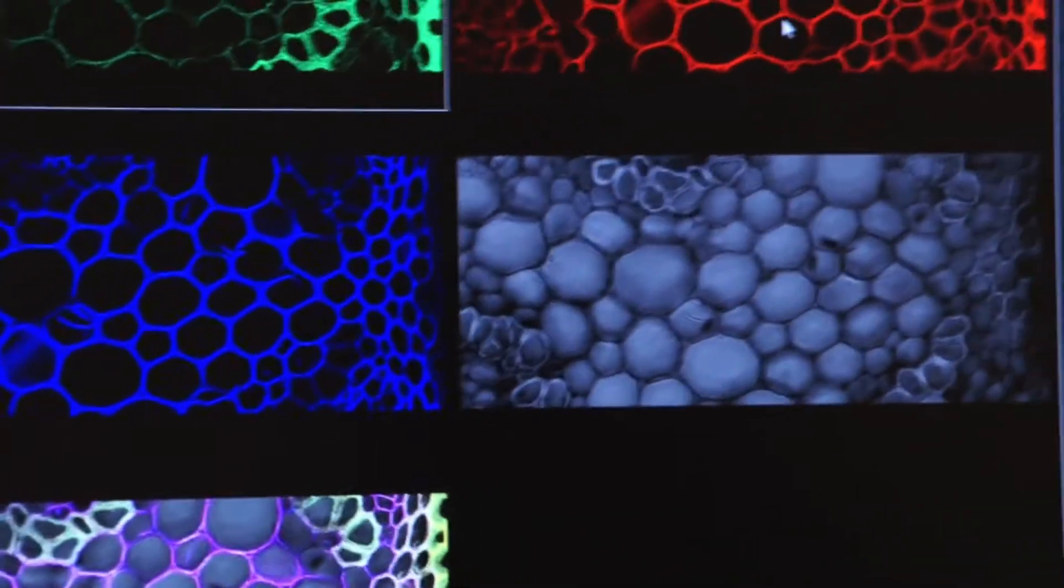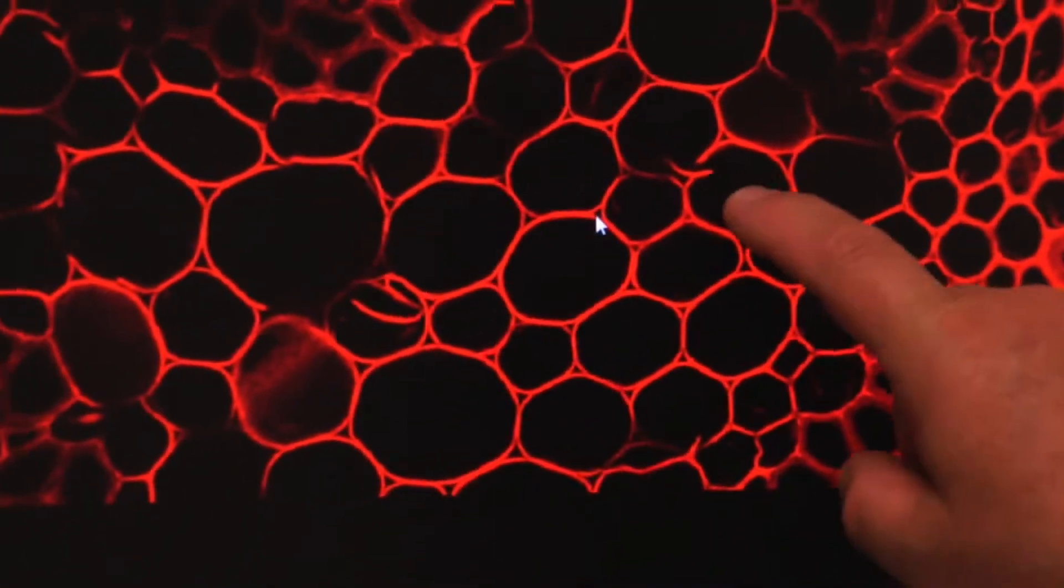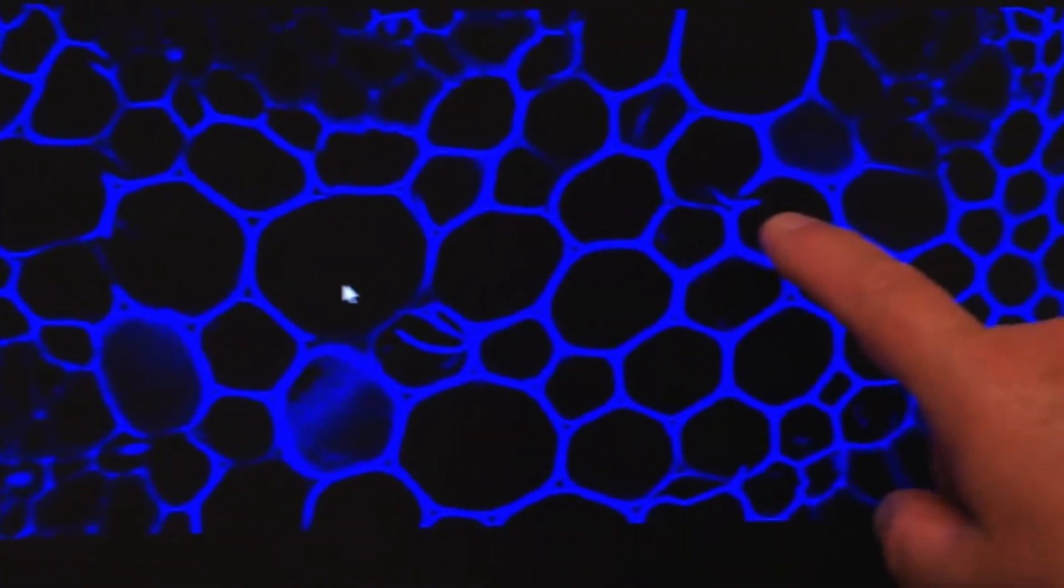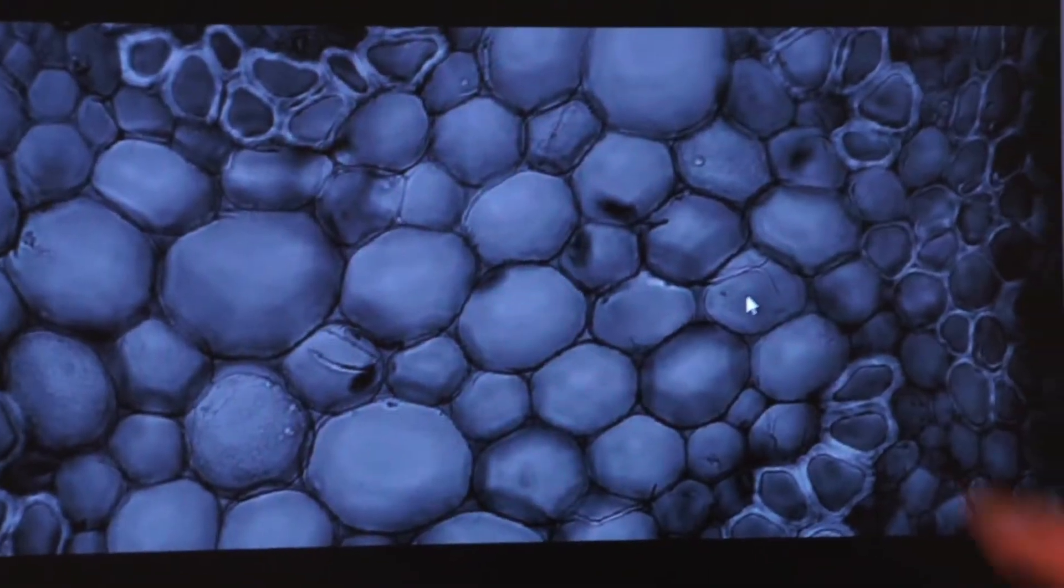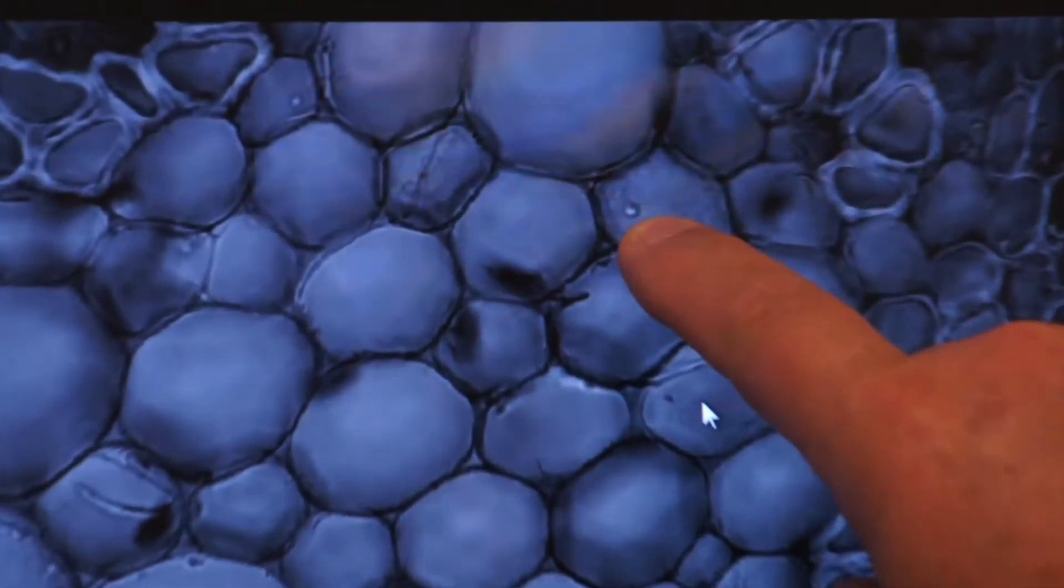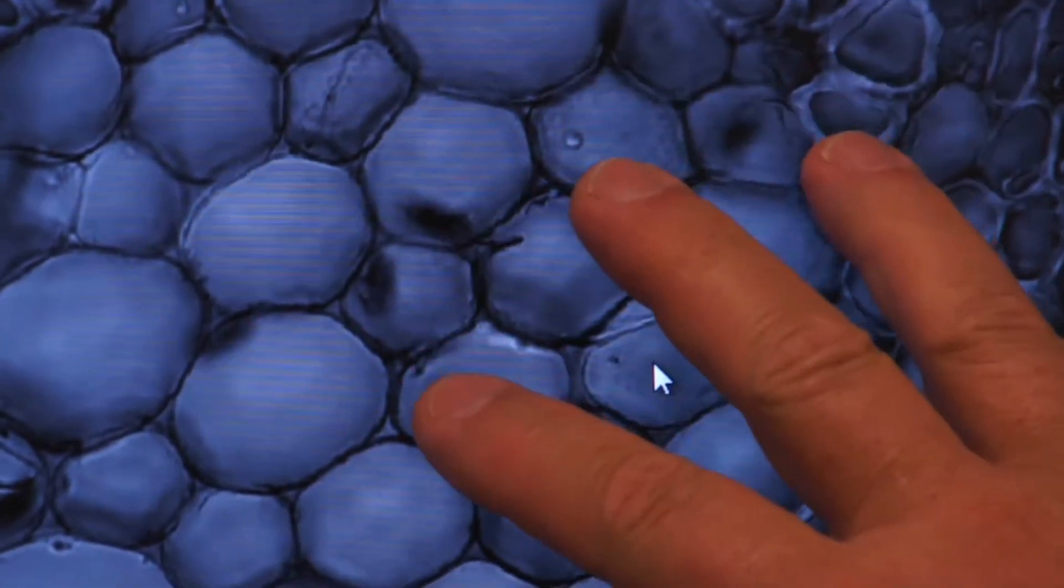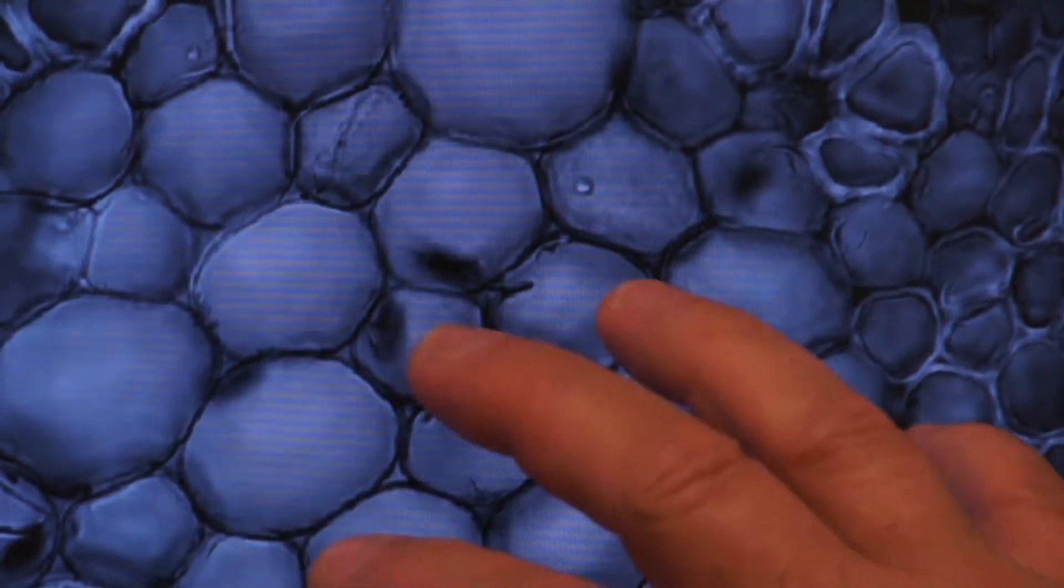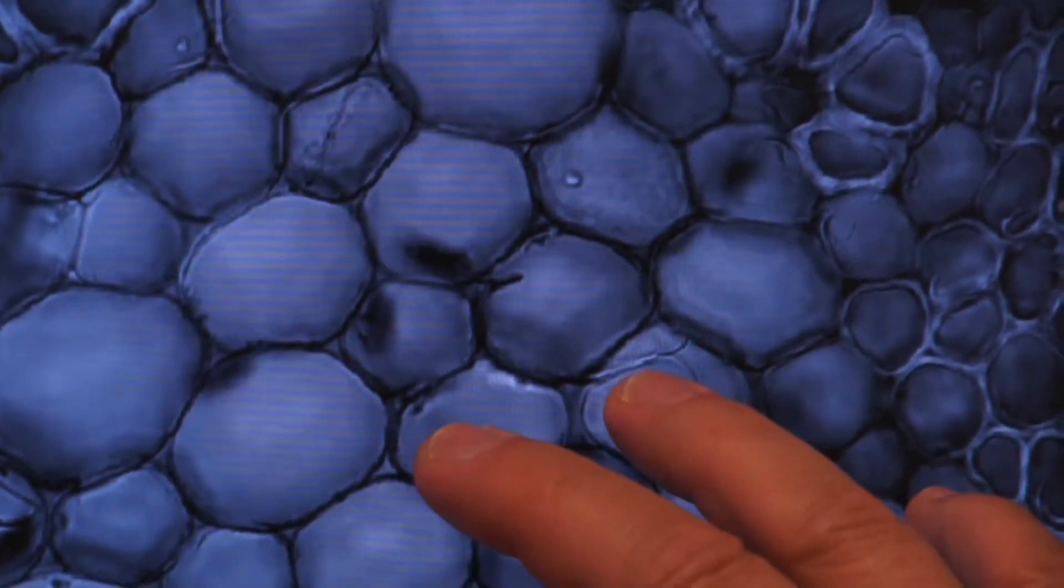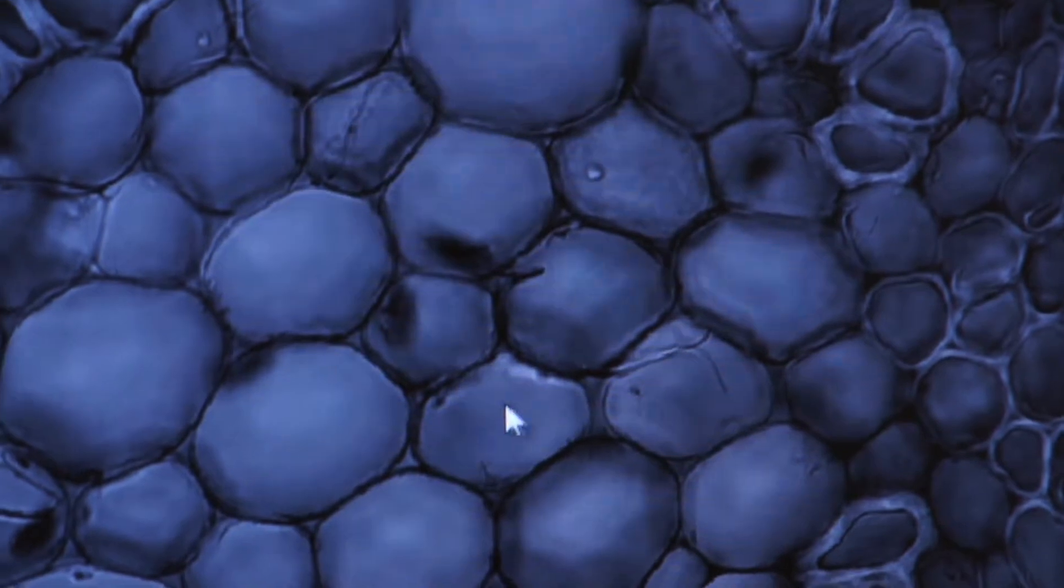What about the TRITC? Same thing, no nucleus. What about the CY5? Once again, no nucleus. But if I go to the transmitted light PMT, voila, there's my nucleus. So sometimes there are structures that you need to see present in your specimen that will not be illuminated by a fluorophore. And so it's important sometimes to use all four PMTs. Then you get a true picture of everything that's going on in your specimen.